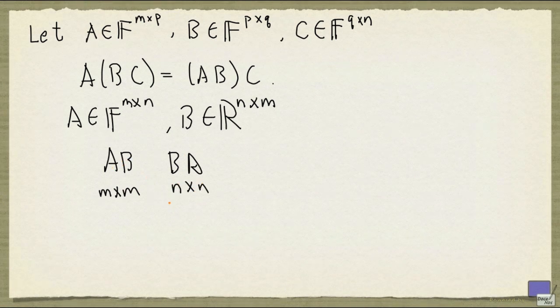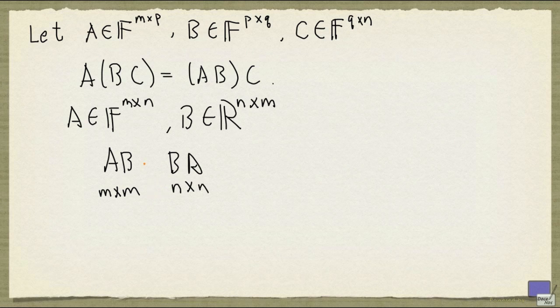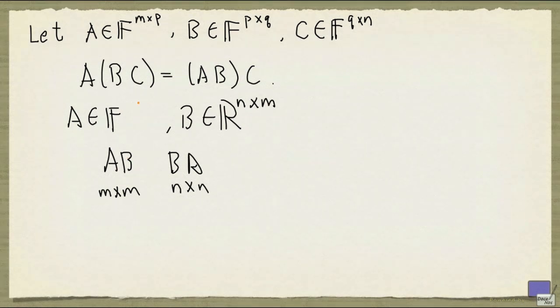So just by looking at this, if M and N are not equal, these two products can't even be of the same dimension. But suppose you look at the case when both are N by N, still commutativity doesn't necessarily hold.